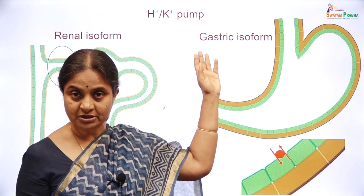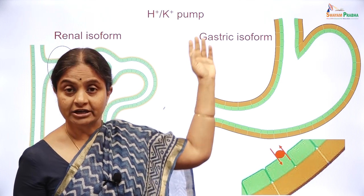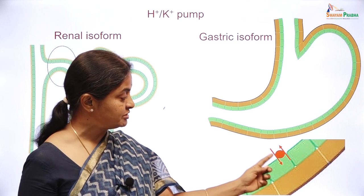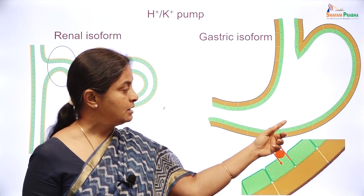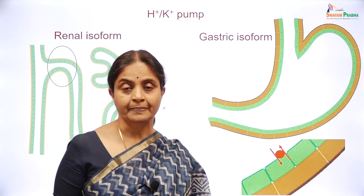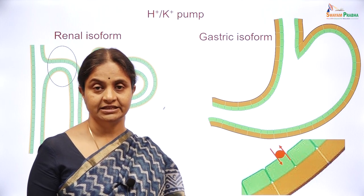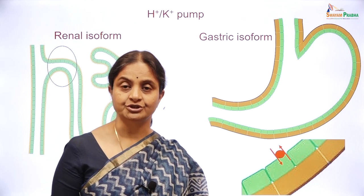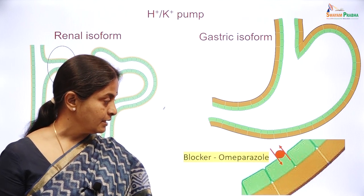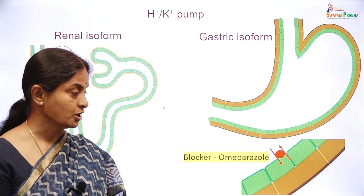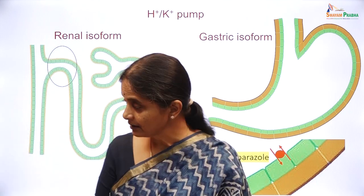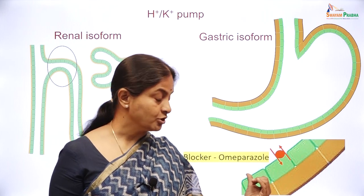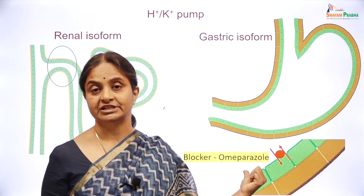The hydrogen-potassium pump is an antiporter which is an ATPase enzyme, and we will call it a pump therefore. There are two isoforms: a gastric isoform and a renal isoform. The gastric isoform is responsible for acid secretion in the stomach. In case of high acidity in the stomach leading to pain, blockers of these transporters are used to reduce pain and treat the symptoms. A well-known blocker used therapeutically is omeprazole or pantoprazole.